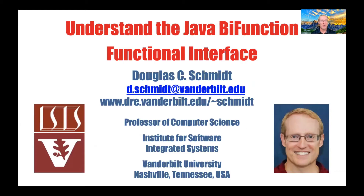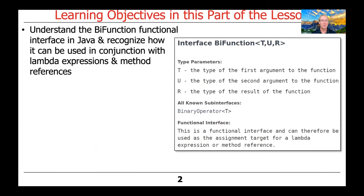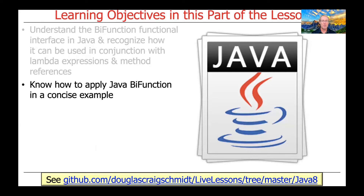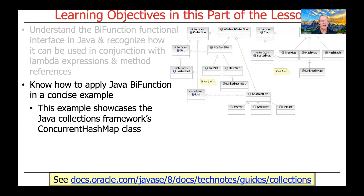Welcome to our discussion of the Java BiFunction functional interface. In this part of the lesson, we'll describe the structure and functionality of Java BiFunction, and we'll show how it can be used in conjunction with lambda expressions and/or method references. This example is going to demonstrate BiFunction in the context of an example from my open source repository, and will showcase the use of BiFunction in conjunction with the Java Collection Framework's concurrent HashMap class.